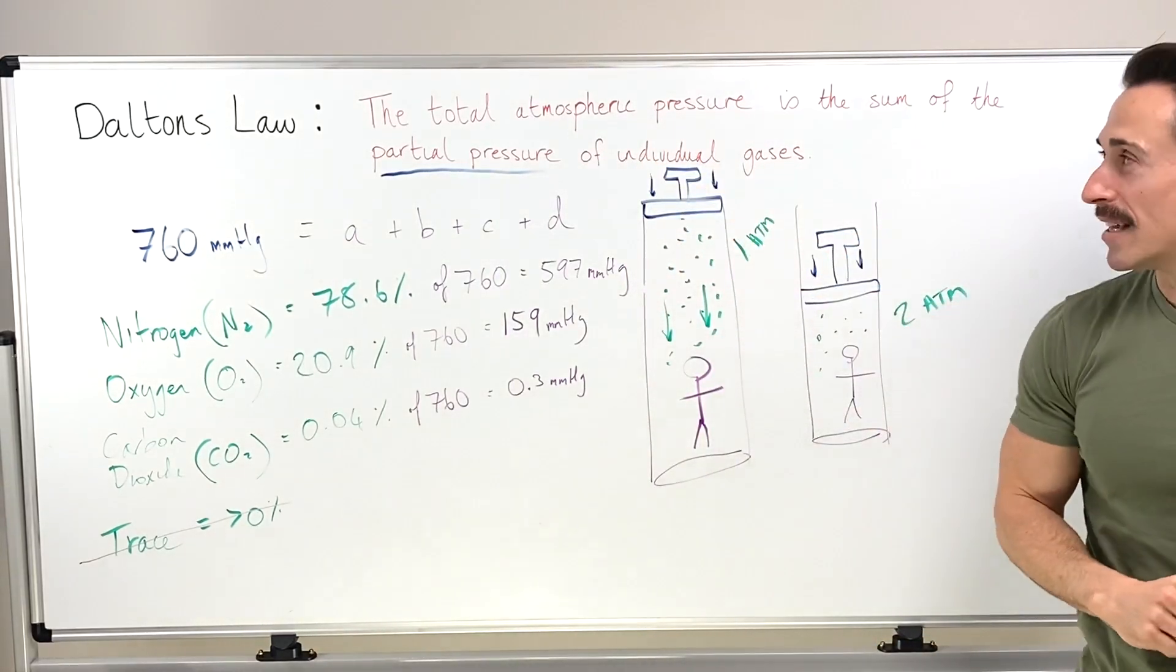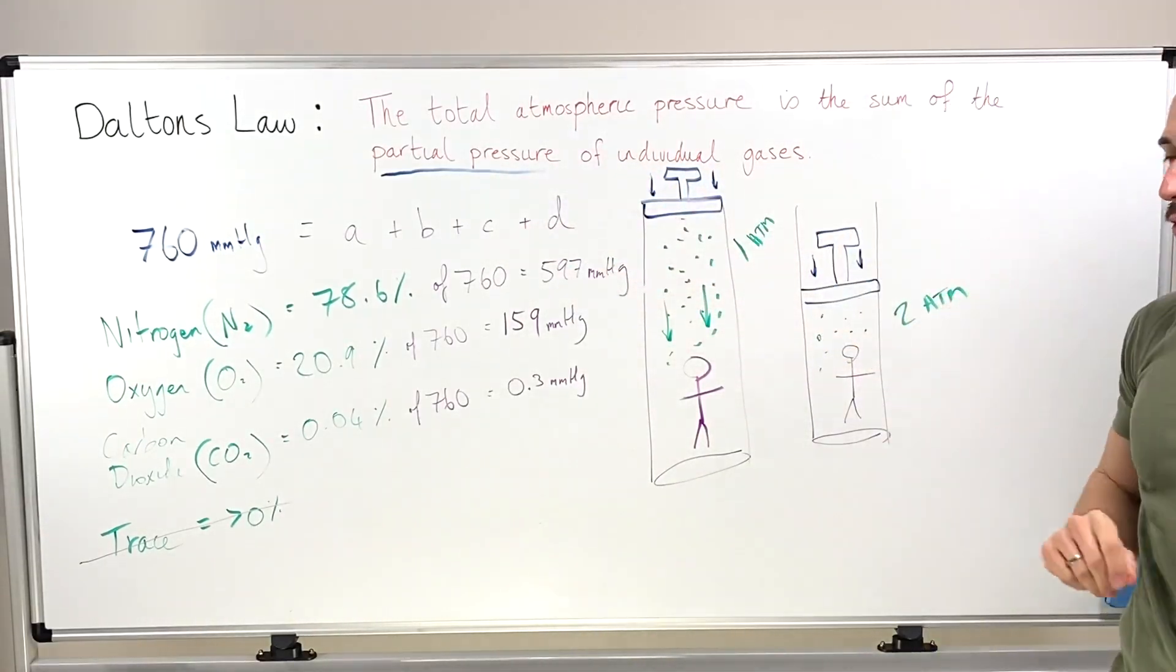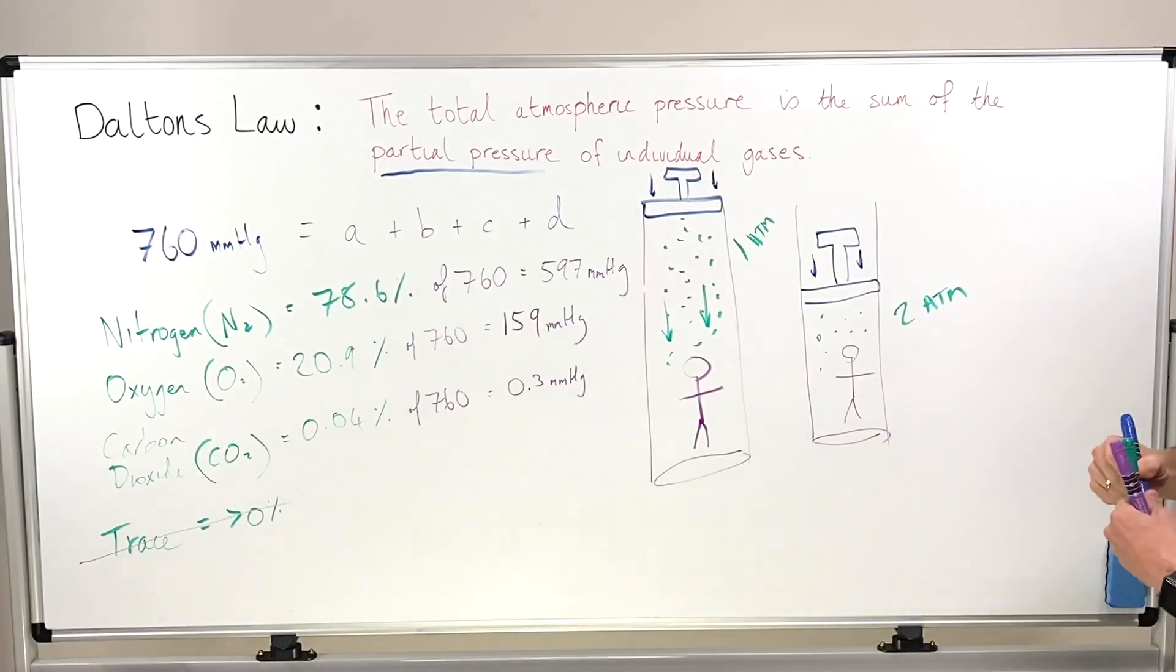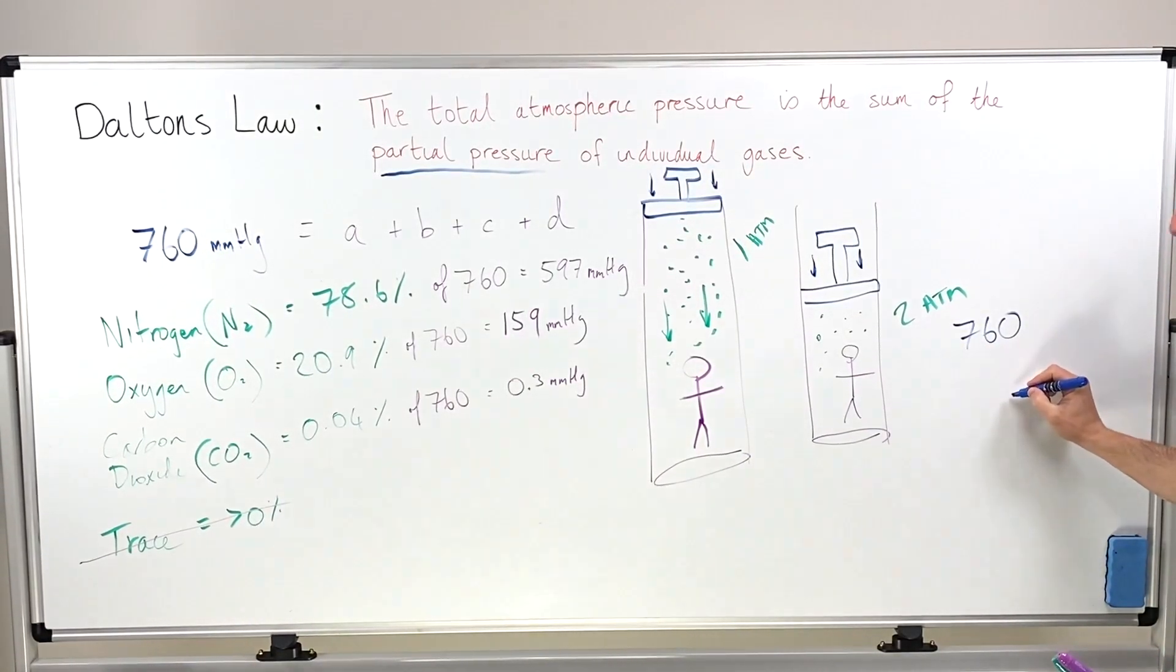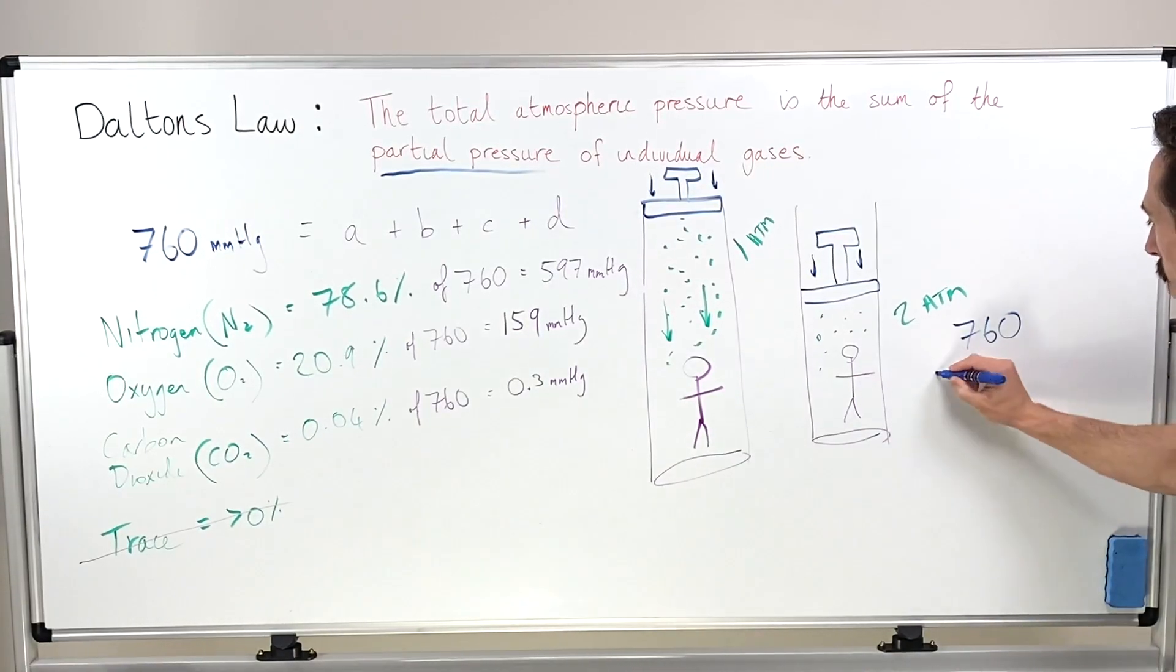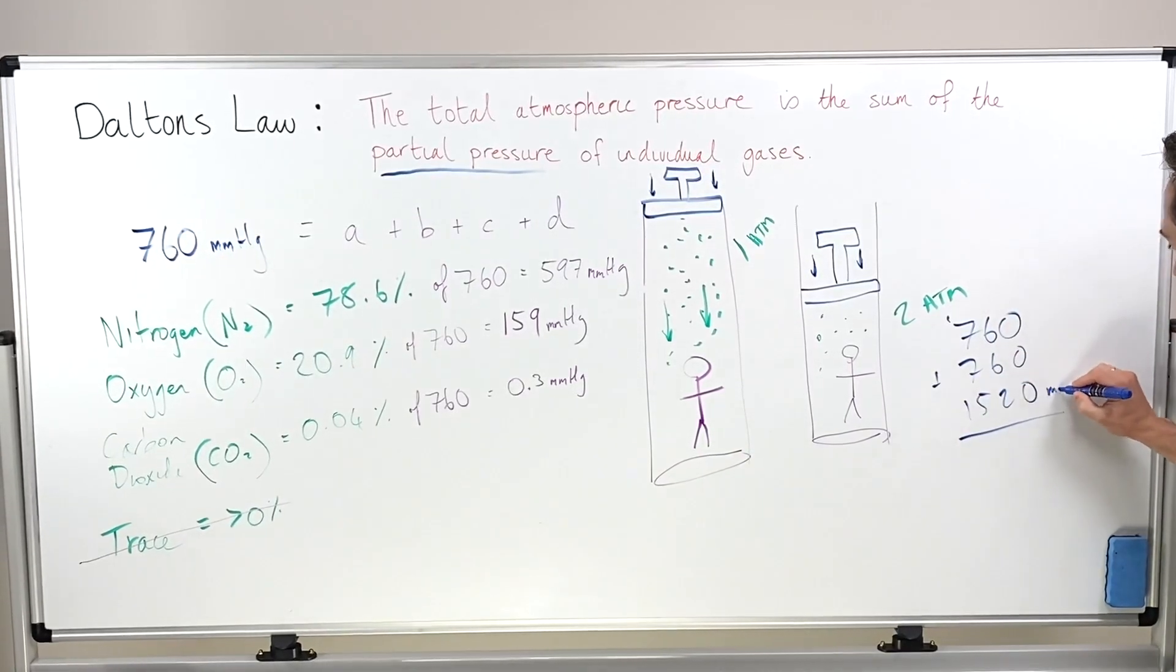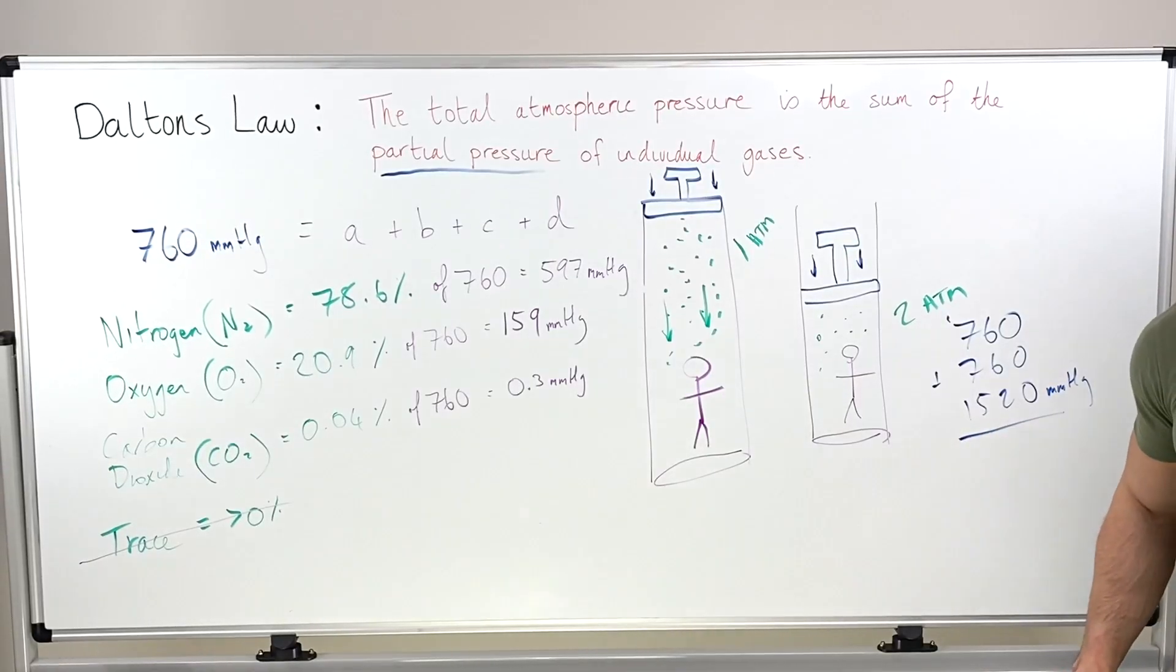Now Dalton's Law states that the total atmospheric pressure is the sum of the partial pressure of the individual gases. So now if we've got two atmospheres worth of pressure, it's no longer 760 millimeters of mercury. We're going to times that by two.